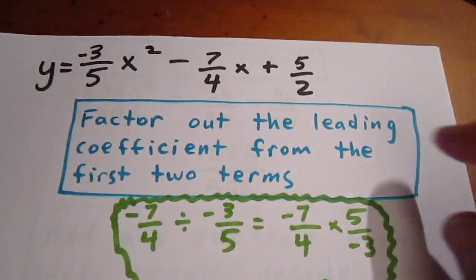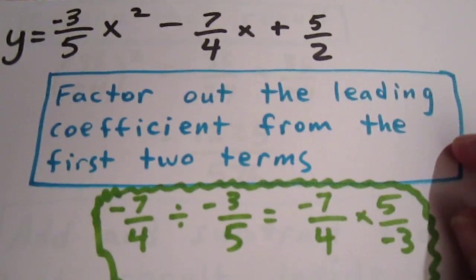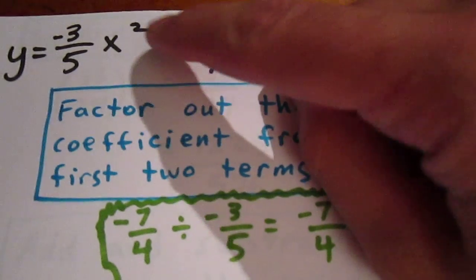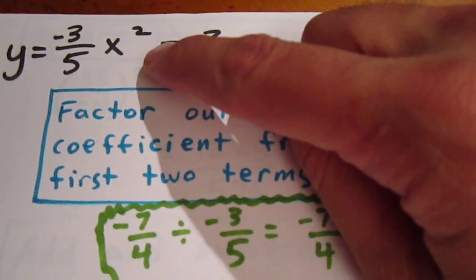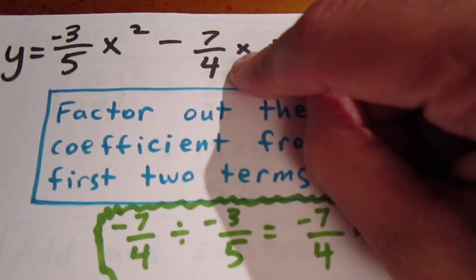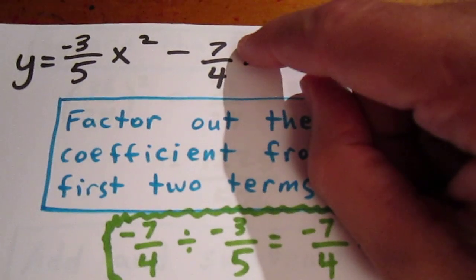We have to follow the steps. The first step is to factor out the leading coefficient from the first two terms. Factoring out negative 3 fifths from negative 3 fifths x squared is easy, but factoring it out from negative 7 quarters is tough. Well, not really though.